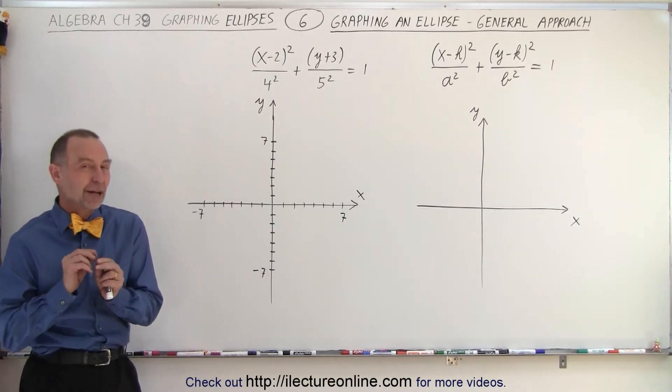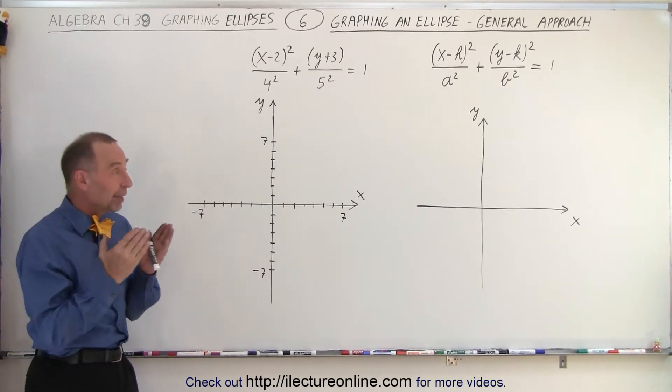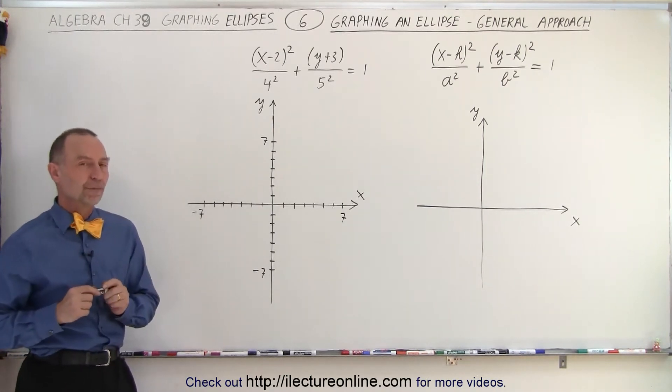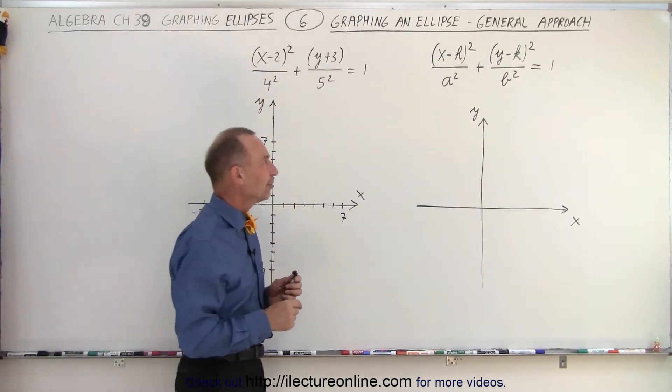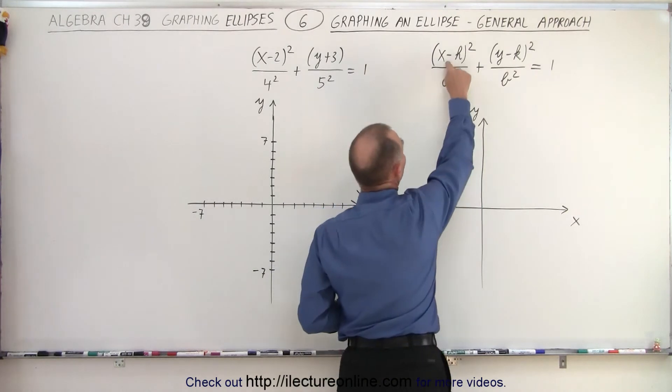So what we need to do first is find the offset if there's an offset, and then go up and down, left or right, depending upon what the equation tells us to do. So this is how we do that. First of all, we need to find the central location of the ellipse by finding the offset.